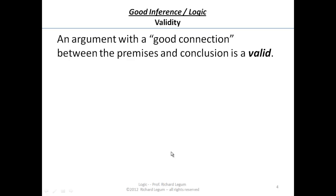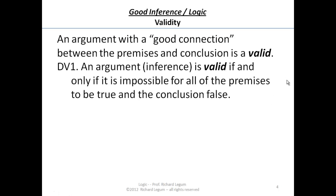As we were saying, an argument with a good connection — that is, a good connection from a logical perspective between the premises and the conclusion — is a valid argument. That is one which is such that the premises really constitute good reasons for believing the conclusion. We're going to define validity in the following way, following the definition in the book, and there are actually two definitions.